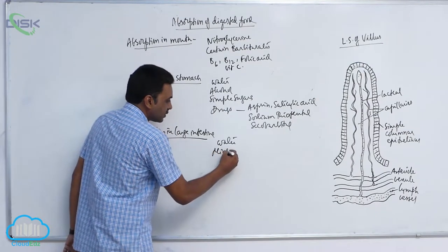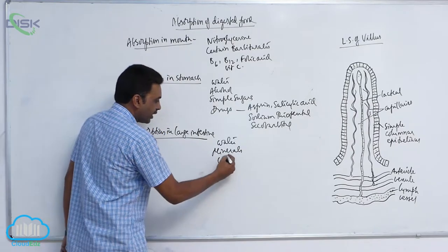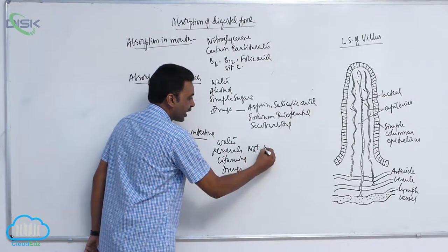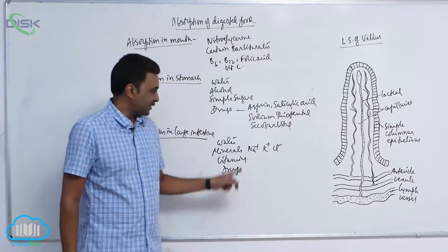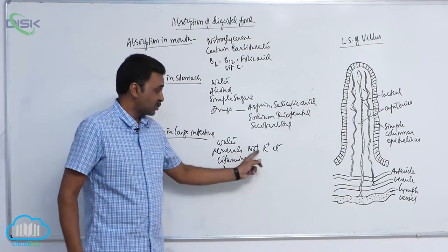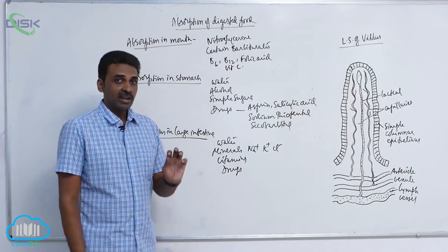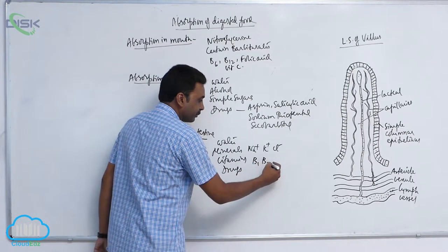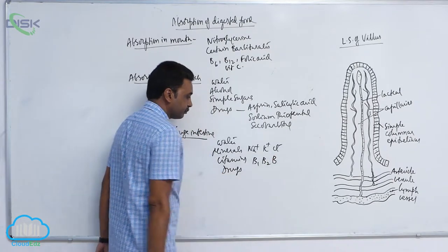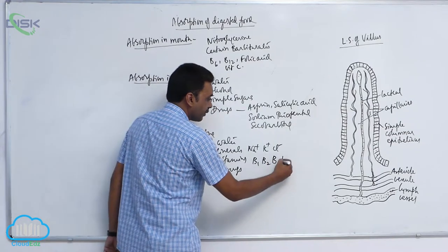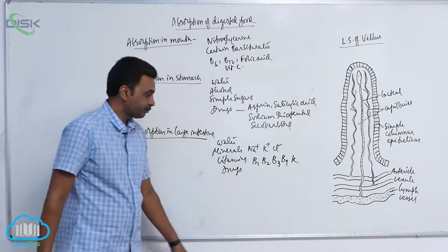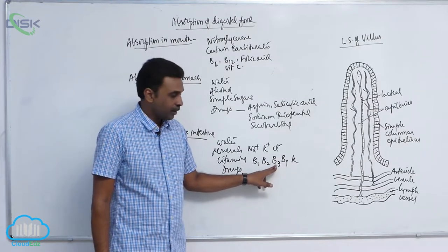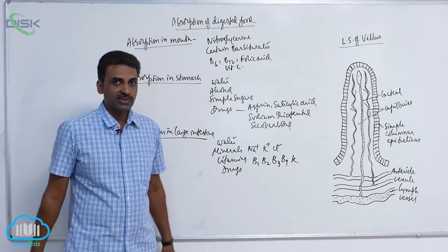Certain minerals and vitamins are also absorbed in the large intestine. Mineral electrolytes such as sodium, potassium, and chloride are directly absorbed through the wall of the large intestine. Vitamins absorbed here include B1 (thiamine), B2 (riboflavin), B3 (niacin), B9 (folic acid), and vitamin K.